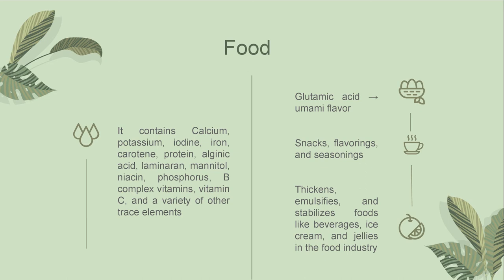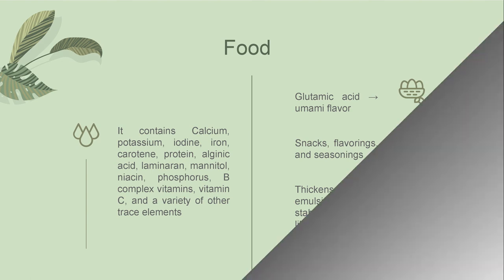Umami is a Japanese name for the fifth basic taste, in addition to salt, sweet, sour, and bitter. Because the umami flavor imparts a mellow, velvety flavor to meals, it is widely employed in Japanese and Chinese cuisine, particularly in the preparation of dashi, a soup stock. It is also used as a sea vegetable in snacks, flavorings, and seasonings. Lastly, it helps thicken, emulsify, and stabilize foods like beverages, ice cream, and jellies in the food industry.